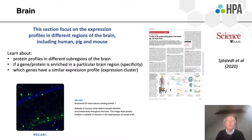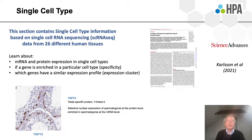The brain section focuses on expression profiles in different regions of the brain, including human, pig, and mouse. You can use this to explore similarity in expression profiles across different brain regions. The single cell type section contains information based on single cell RNA sequencing, and what is new for this version is that we now have data from 26 different human tissues spanning most of the important organs in the human body, and you can also explore similarity in expression profiles between different genes.